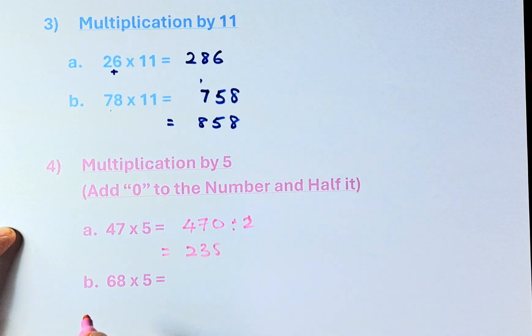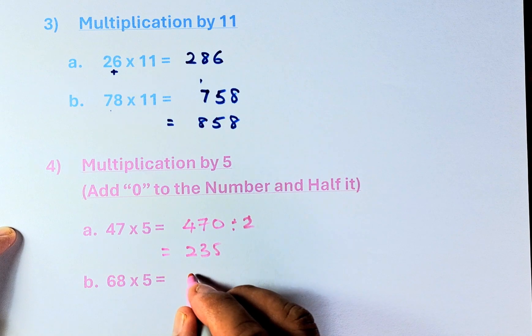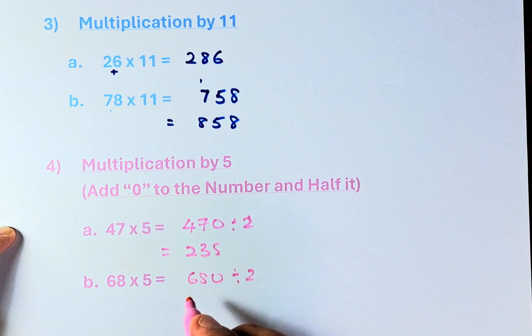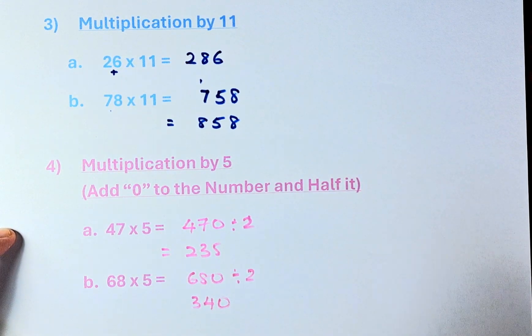Interesting, right? How about 68 times 5? The first thing is going to be 680. You put a 0 and divide by 2, and the answer is going to be 340. Awesome.